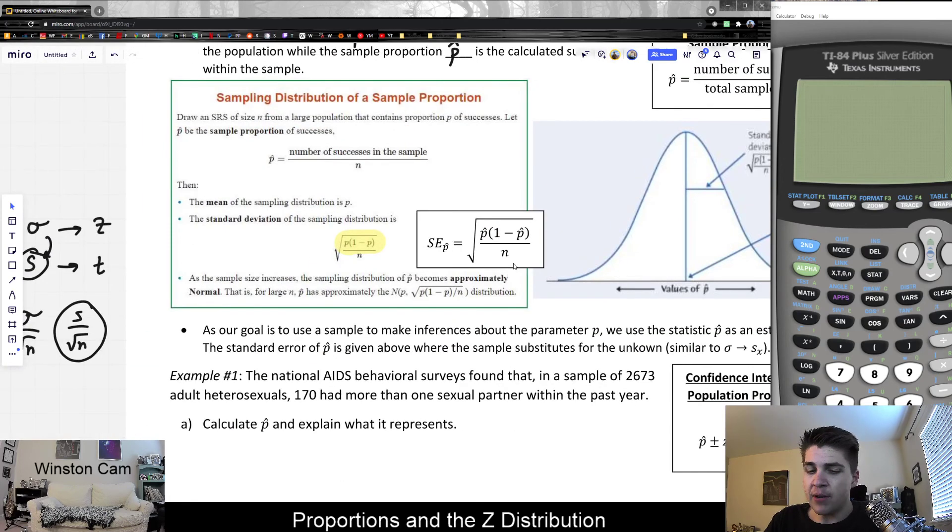In that particular scenario, we would know p hat, not p. Another point to be made is that we often use p hat as an estimator to p in these formulas. The true standard deviation of the population would be this, but we use p hat as an estimator for the standard deviation. We just call that the standard error.